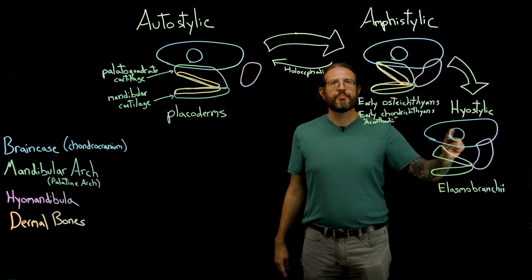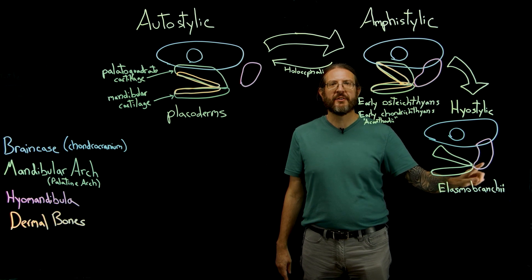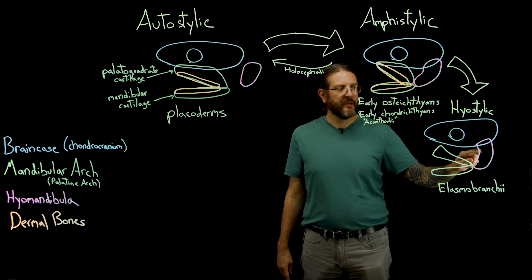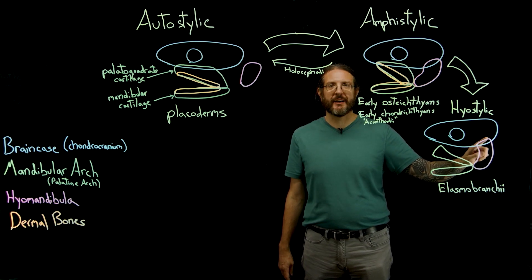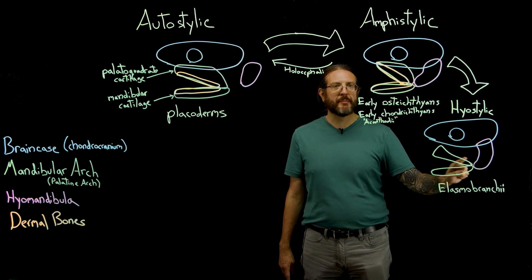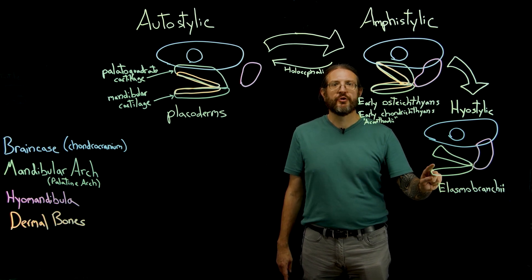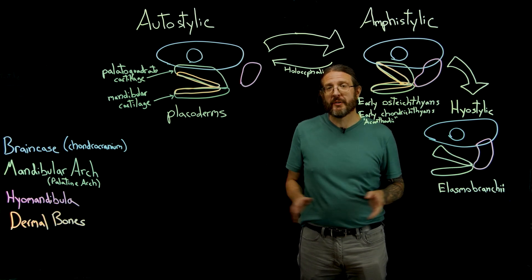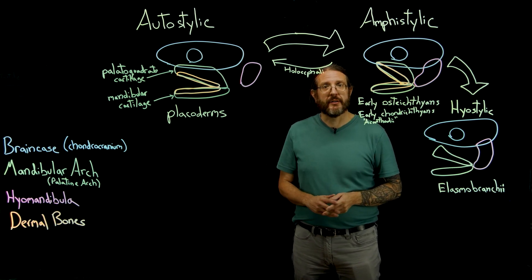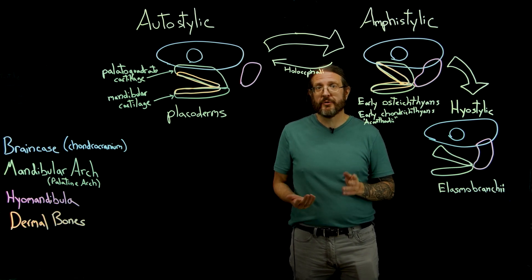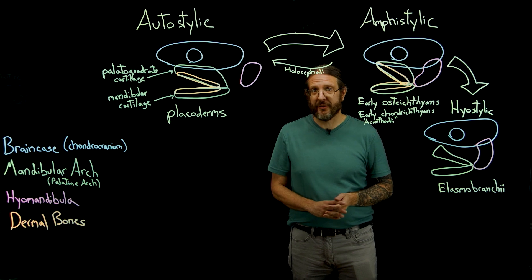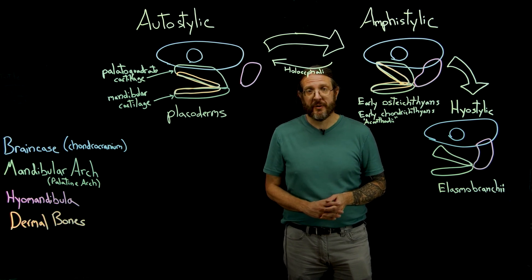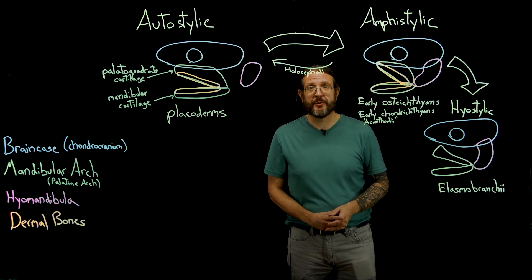Here's the brain case in blue and the hyomandibula in purple affixed to the rear of the brain case by a flexible joint. And here's the mandibular arch joined to the ventral portion of the hyomandibula at its joint. There are no dermal elements to draw here because, as you'll recall, modern sharks and their relatives have lost all the dermal bone that their ancestors possessed.